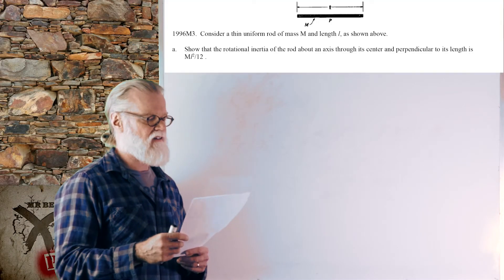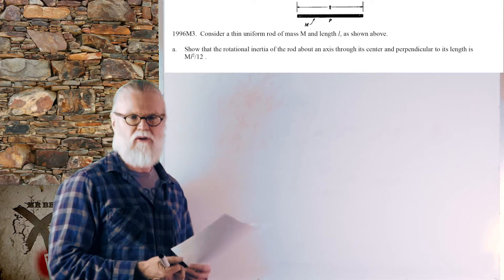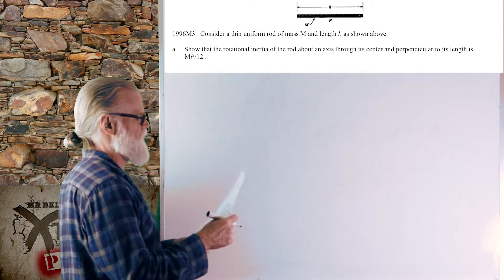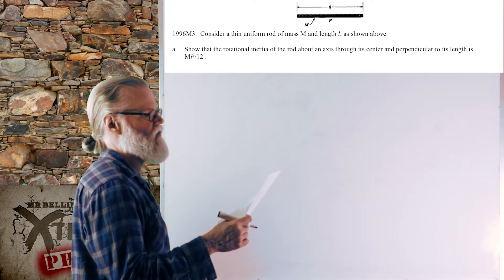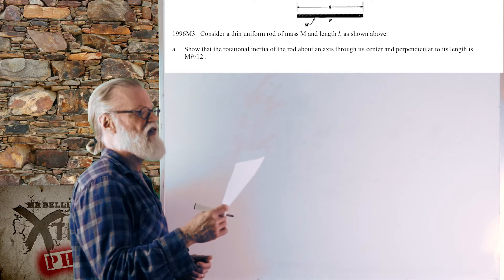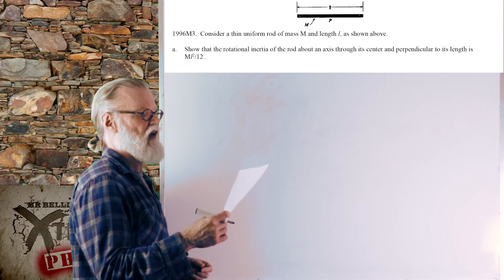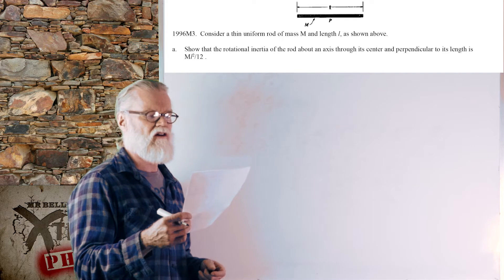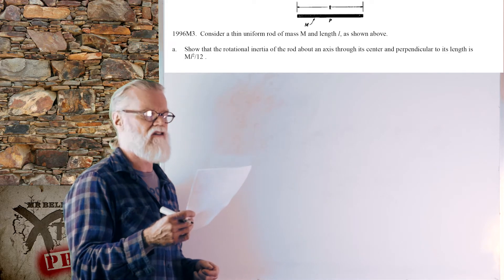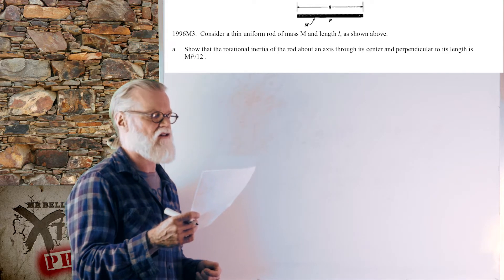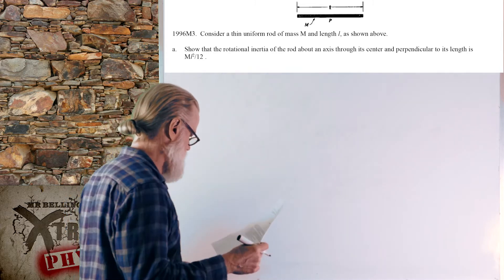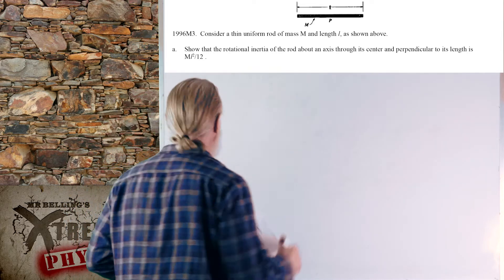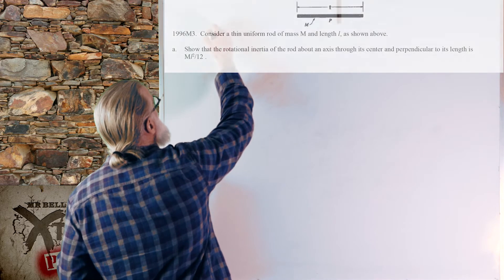All right, let's try the free response 1996 number three. First we gotta show the rotational inertia. We've got a thin rod of mass M and length L. Show that the rotational inertia of the rod about its axis through its center and perpendicular to its length is ML squared over 12.